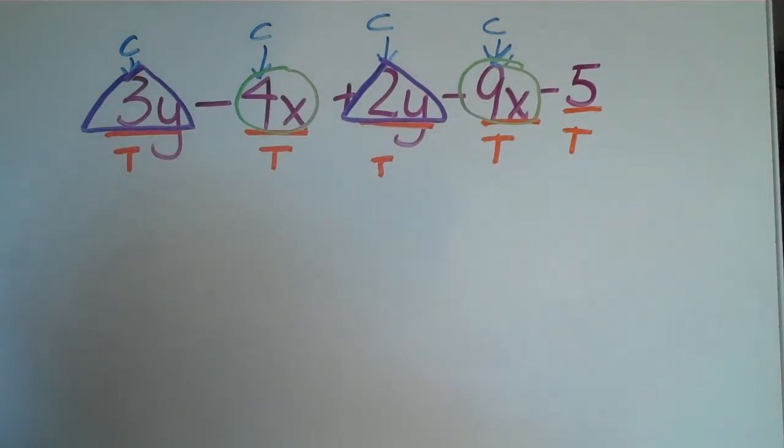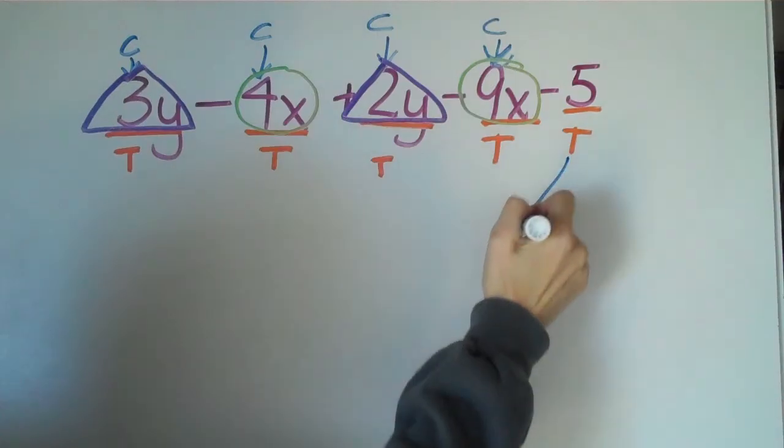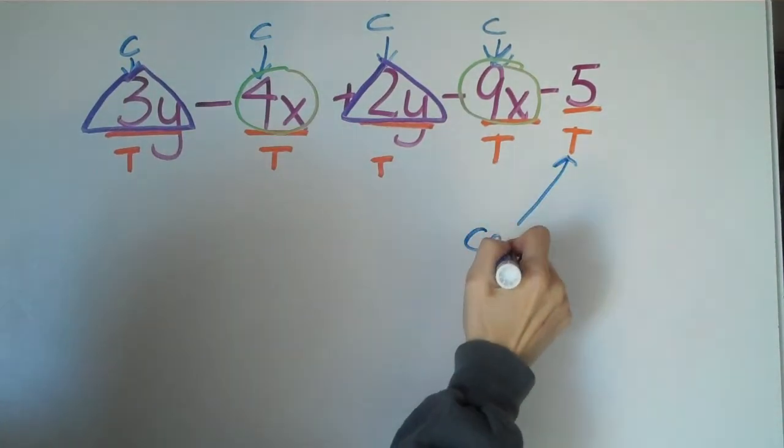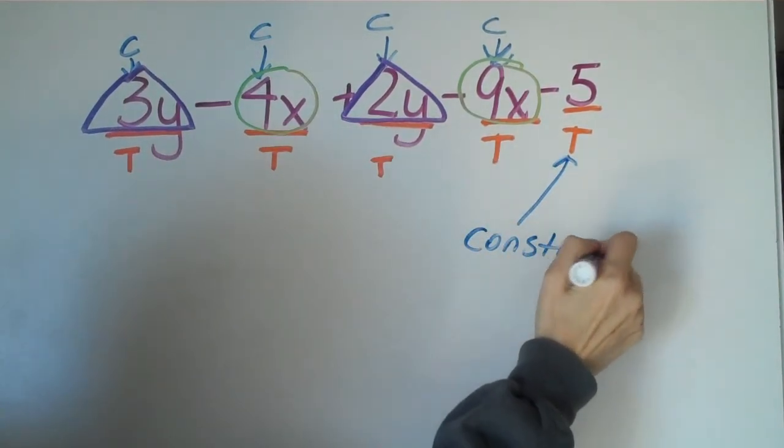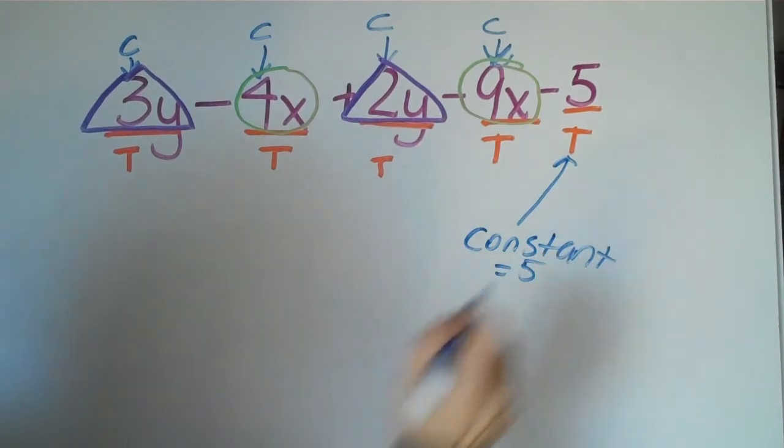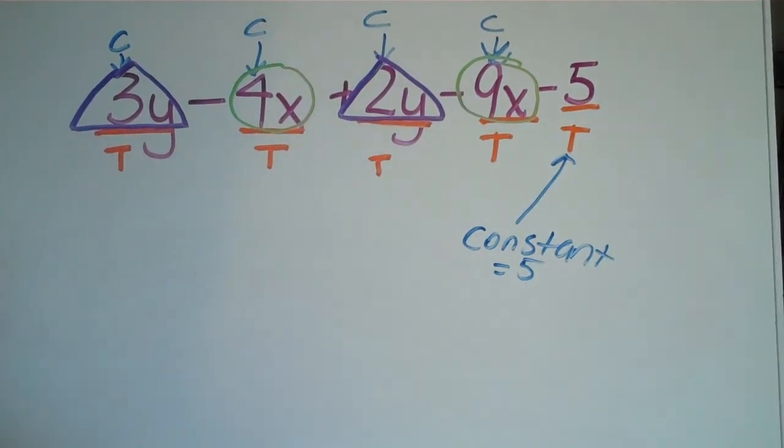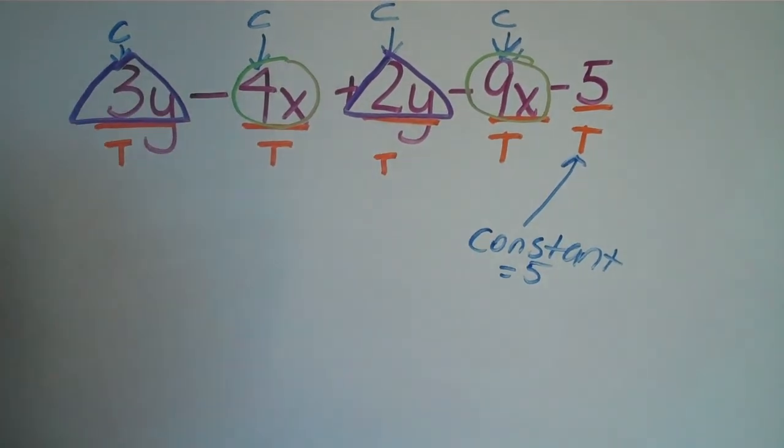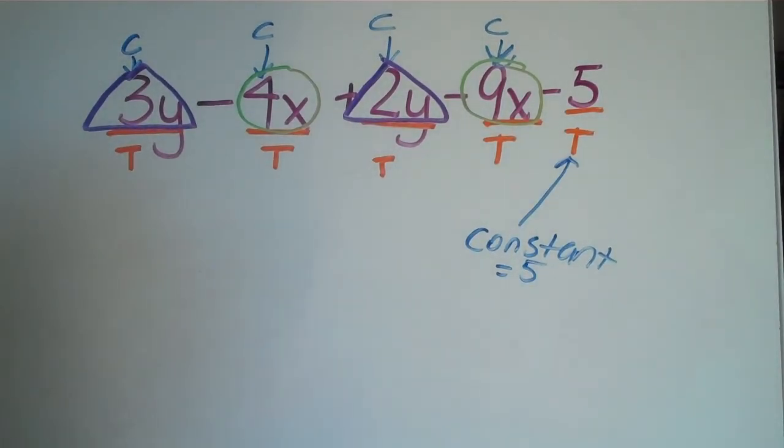Okay, so that's it. The only, and which brings us to this one, which is our constant. So 5 is our constant. Okay, so those are the different parts of identifying a term, identifying the parts of an expression rather. So if you practice this, I know you'd be real comfortable with it.